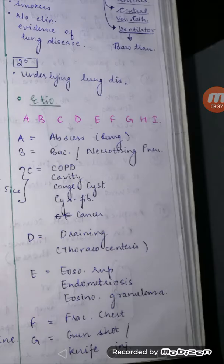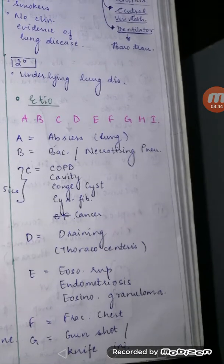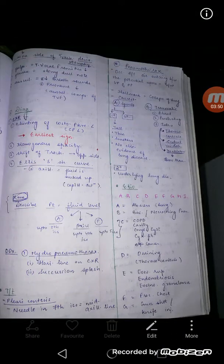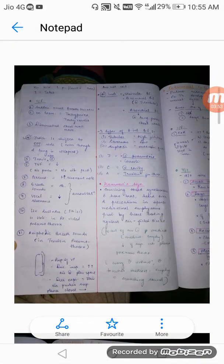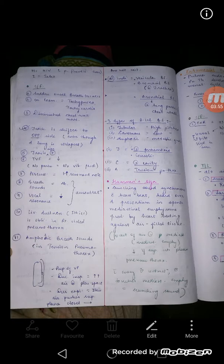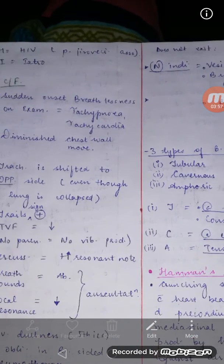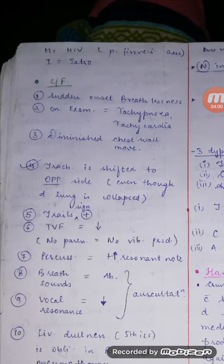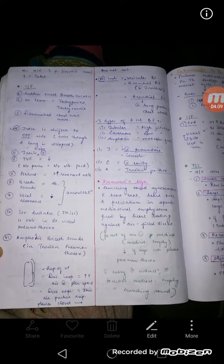F is fractured chest. G is gunshot injury or knife injury — all penetrating injuries. H is HIV, in which pneumocystis jirovecii (formerly pneumocystis carinii) pneumonia is very common. I is iatrogenic — ventilator-associated, central venous catheter-associated, or thoracocentesis-associated.